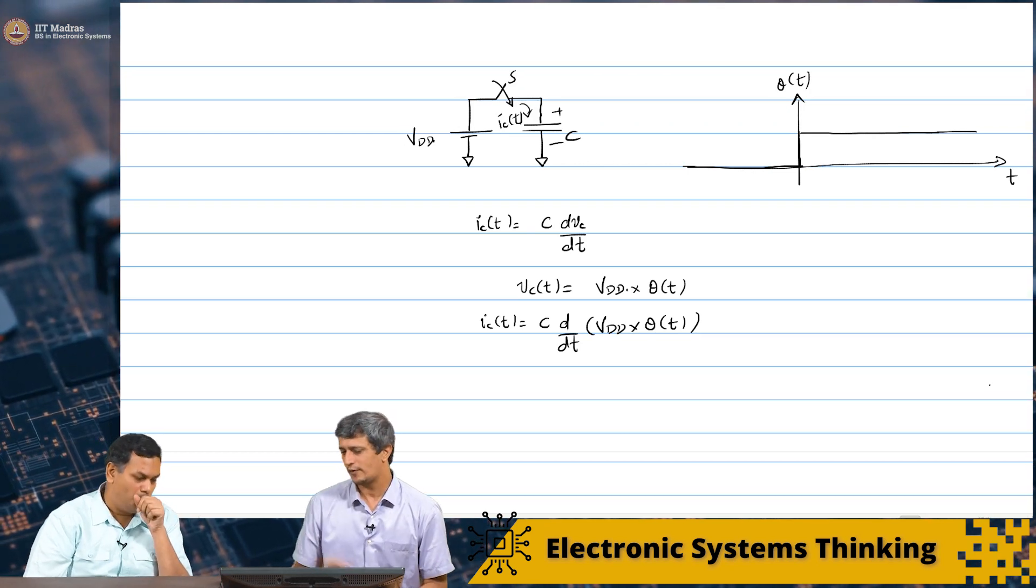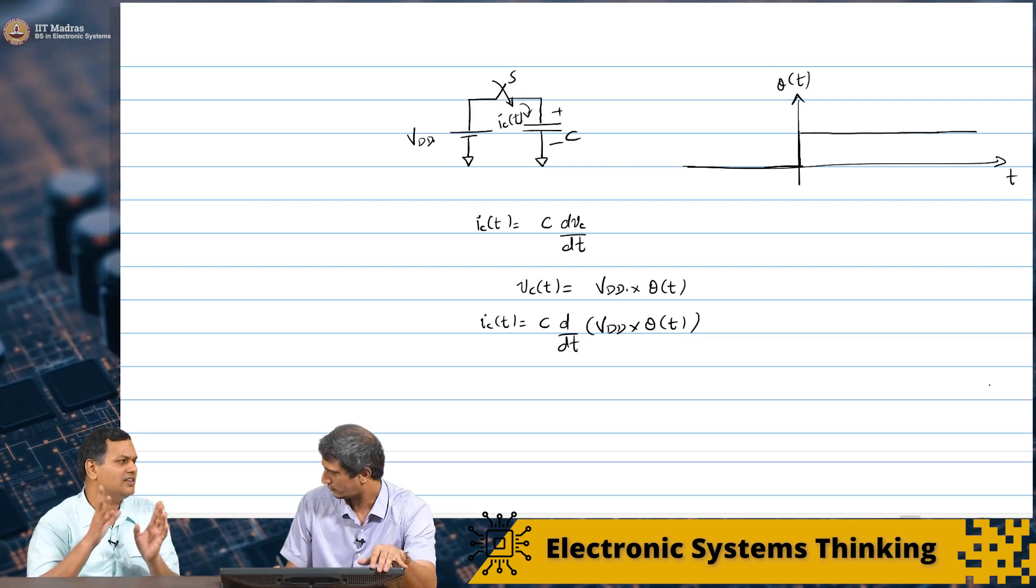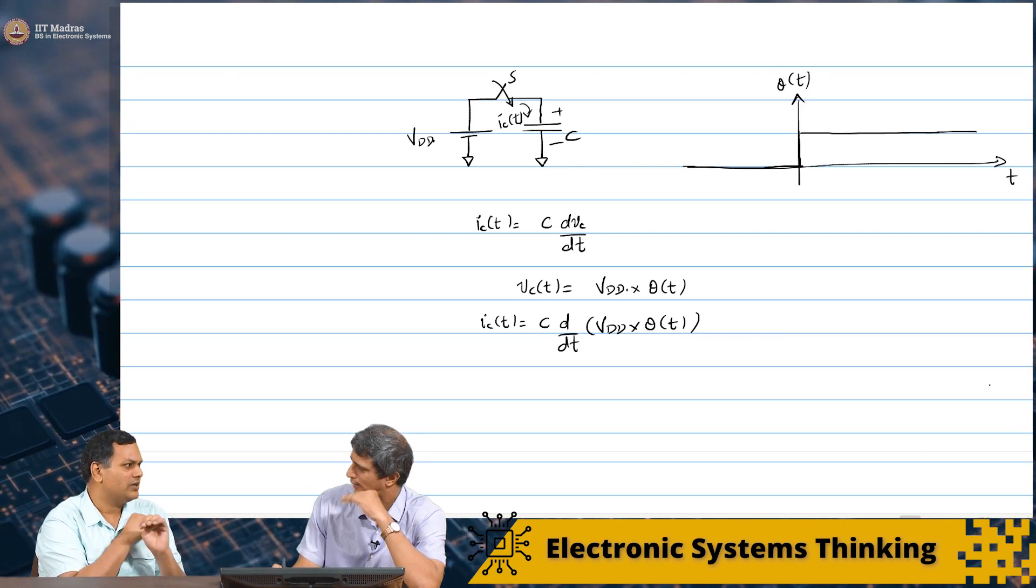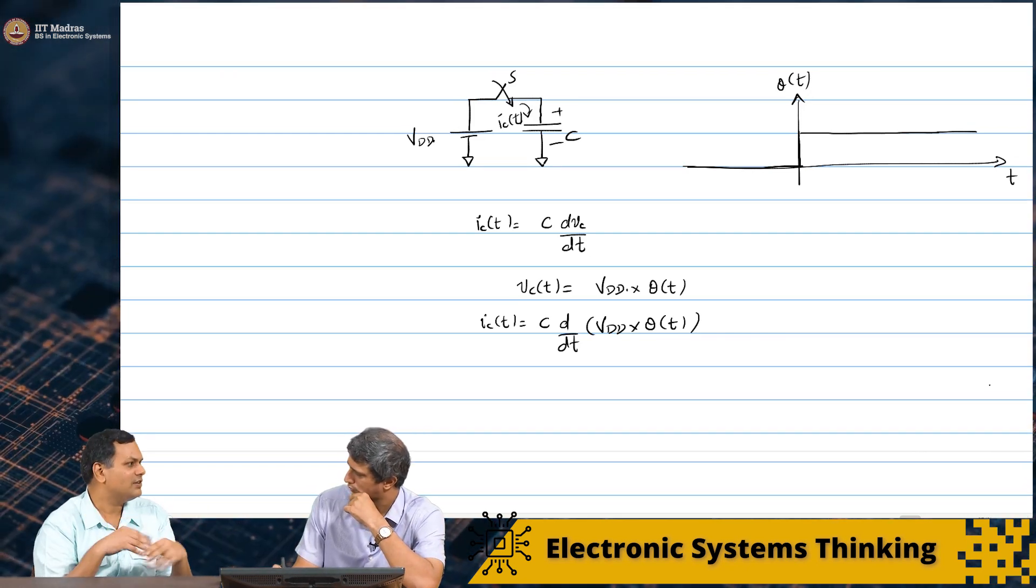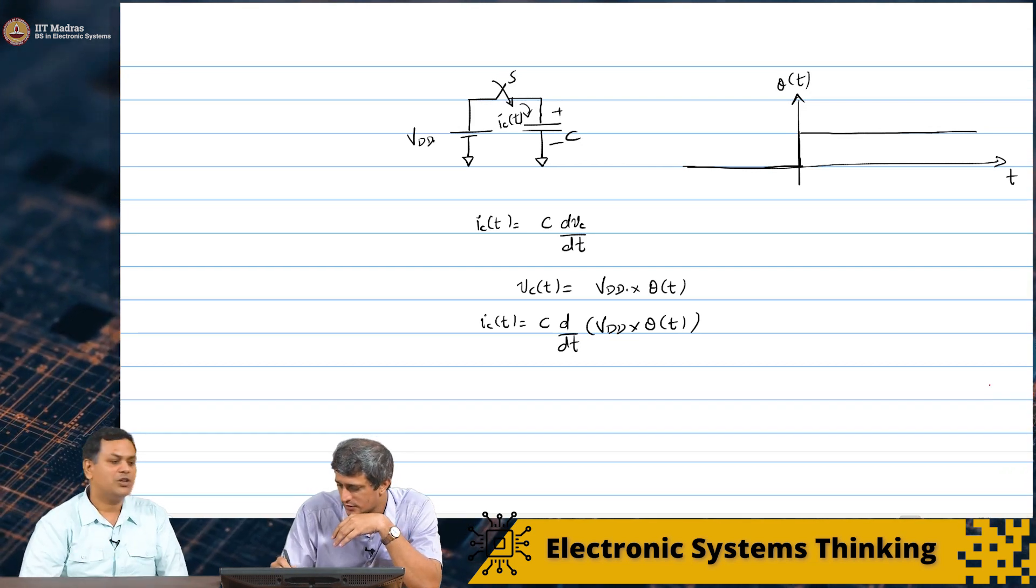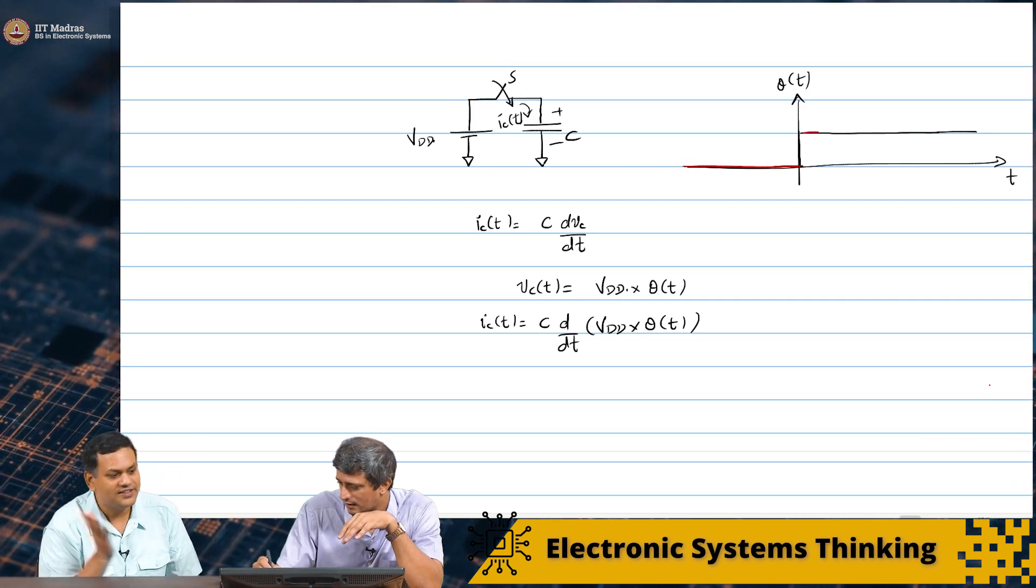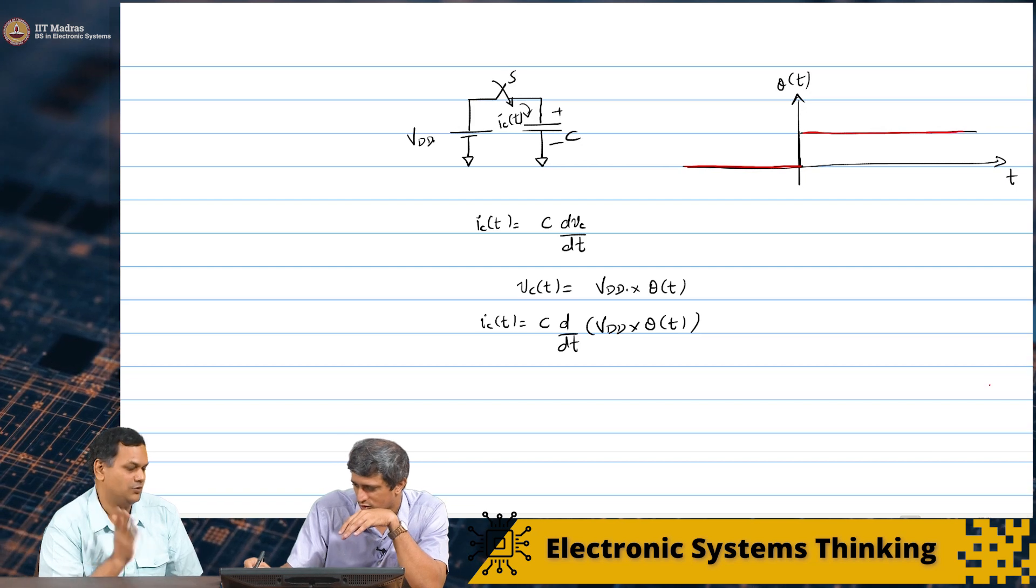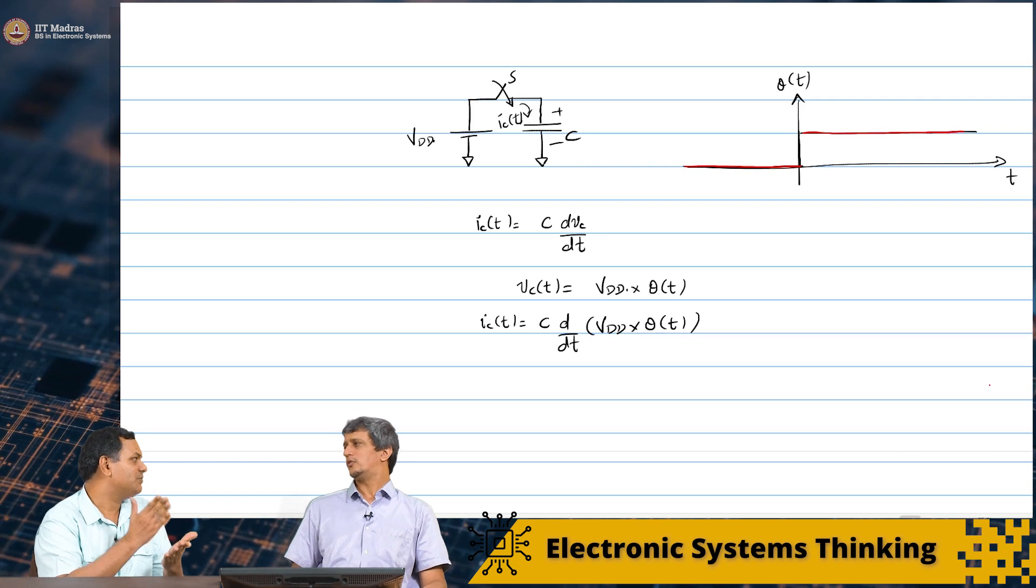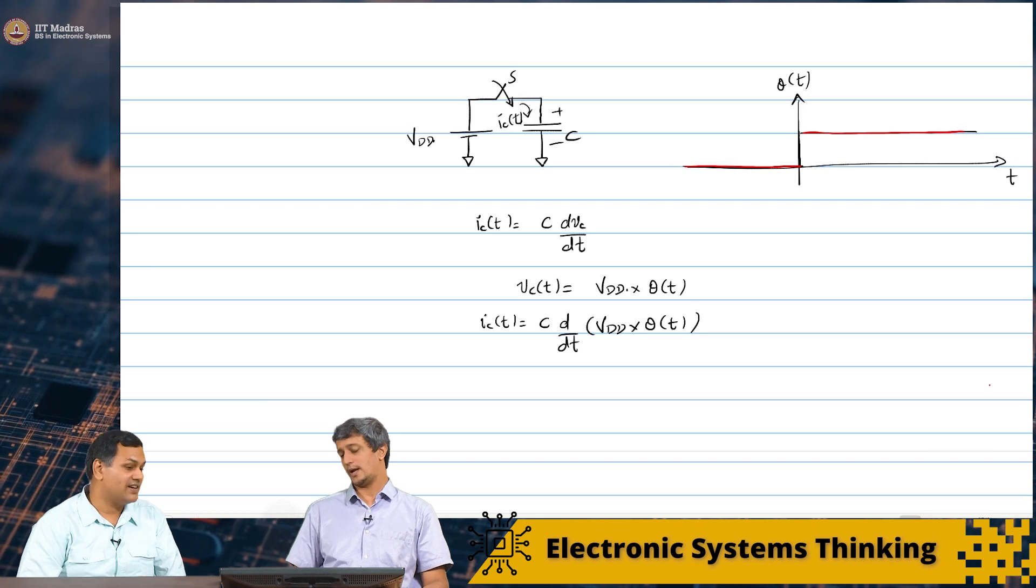So, this derivative itself is slightly tricky to deal with. So, we will not get into that side. I think they will deal with it in a future course. In signals and systems and stuff you will deal with such functions. So, effectively what we can say is if you are interested in the voltage across the capacitor, it looks like before at t less than 0 it is 0. At t greater than 0 it is Vdd. That much we can tell.